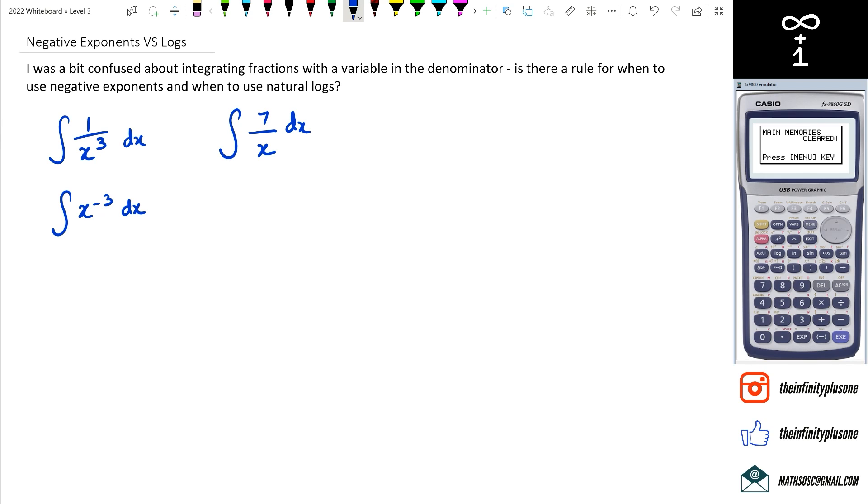Right, so this is where whenever you integrate 1 over x, you're actually going to be getting ln of x plus c. All right, so those are kind of like our two basic ones that we start off with.